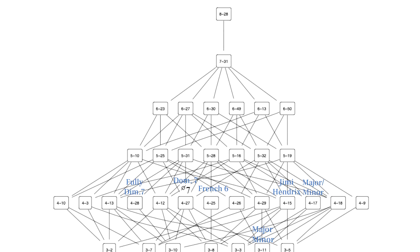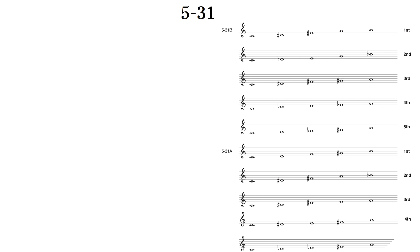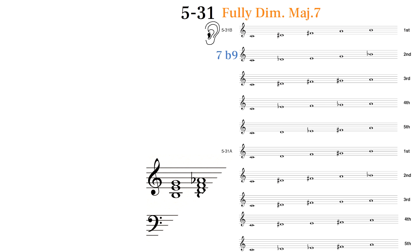Next, we have V31, which is similar to the previous set but it has all four pitches of the fully diminished 7th chord plus an extra pitch. It's probably best known as a b9 chord, where a b9 is added to a dominant 7th chord creating a very dissonant pull to a resolution.